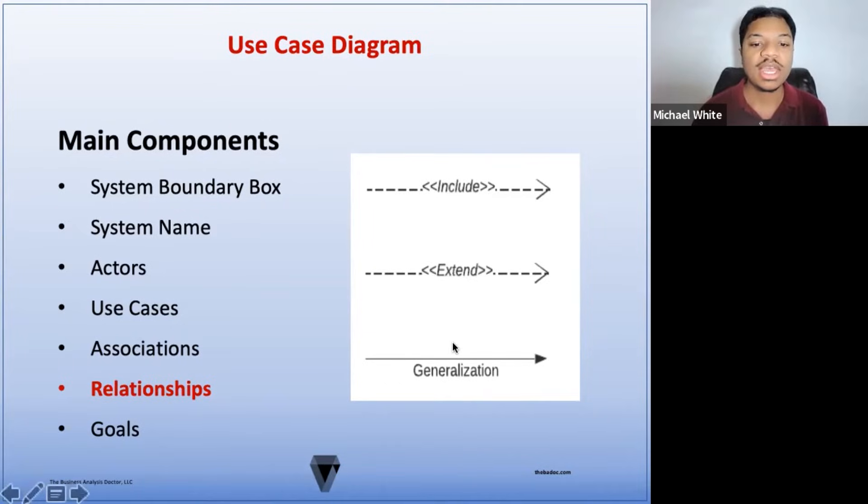An extended relationship can be any additional functionality to a base use case. When used this way, the extended use case can be optional and does not impact the execution of the base use case. Extended use cases can also be an exception to a base use case. Extended use cases are also represented with a dashed line, but these have arrows pointing toward the base use case from the extended use case.